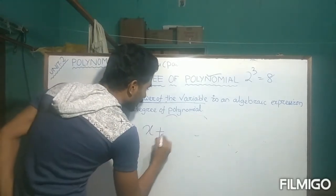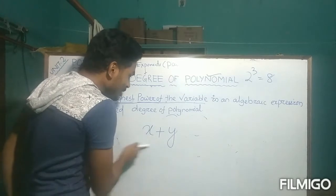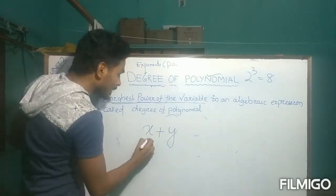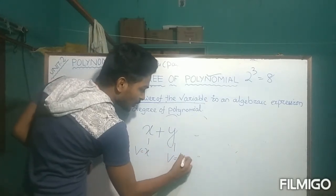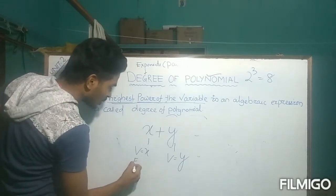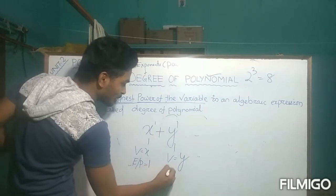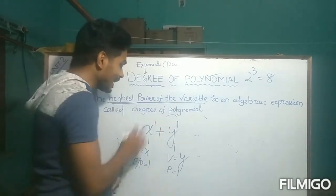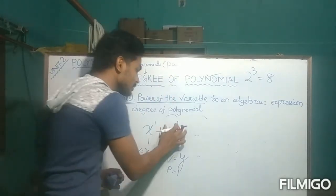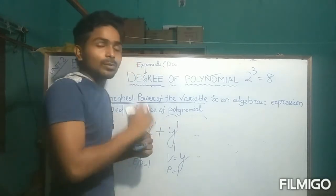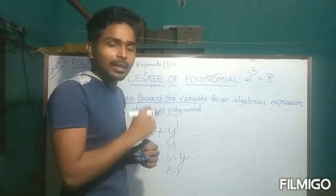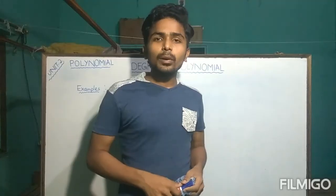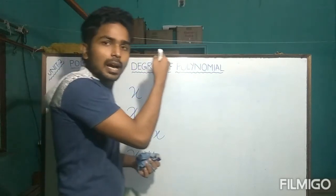Suppose we have X + Y. It is an algebraic expression in two variables. The variable in the first term is X with power 1, and in the second term the variable is Y with power 1. Both variables have the same power of 1, so the highest power is 1, and the degree of this polynomial is 1.